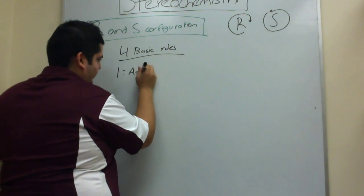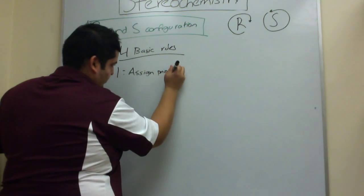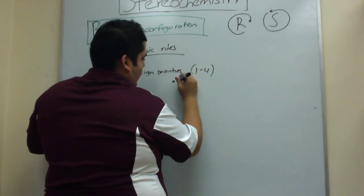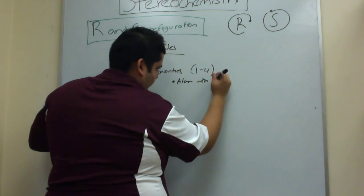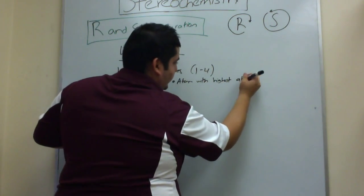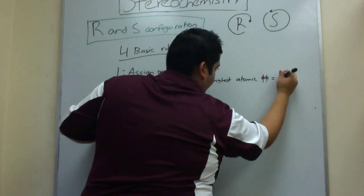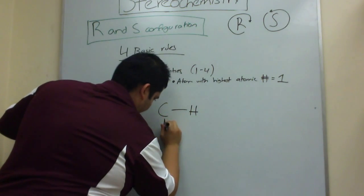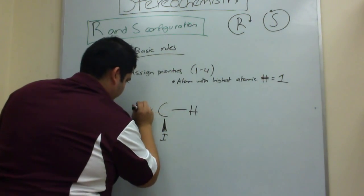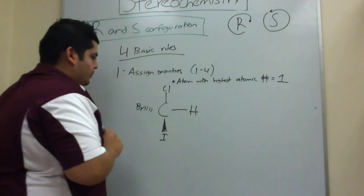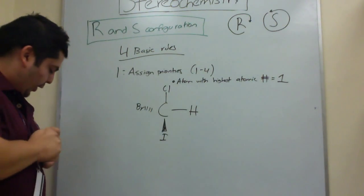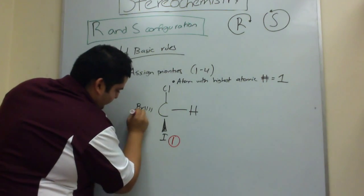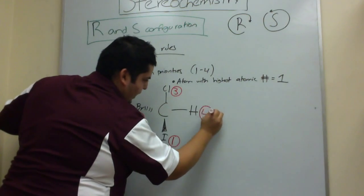Number one: assign priorities one, two, three, four. We're going to give the atom with the highest atomic number priority number one. So if we have this molecule, iodine is going to be our number one priority, bromine is going to be number two, then three, and four — because hydrogen has the lowest atomic number.